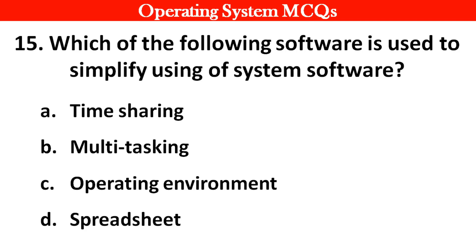Next question: Which of the following software is used to simplify the use of system software? Options: A. Time-sharing. B. Multitasking. C. Operating environments. D. Separate sheets. Right answer is option A: Time-sharing.